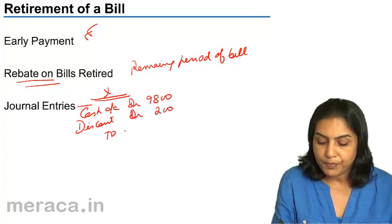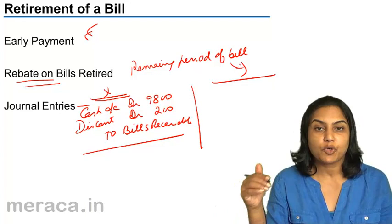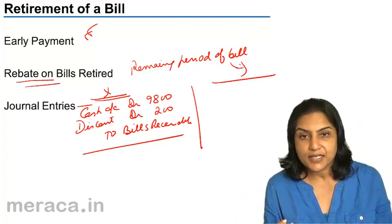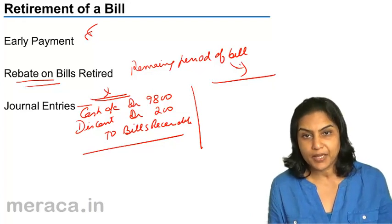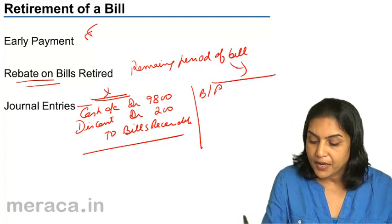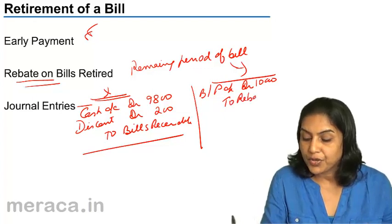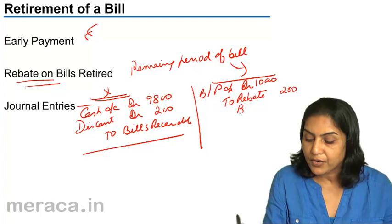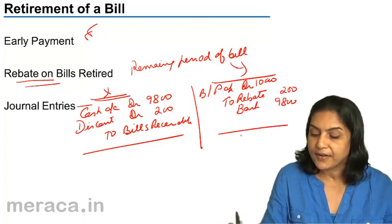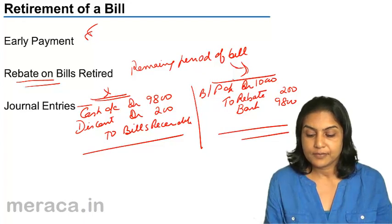So the entries in the books of X where bills receivable was there: cash account debit 9,800; discount account debit 200; to bills receivable 10,000. Similarly in the books of Y, the acceptor, where there is a bills payable — he gets a rebate, which is an income for him. The entry would be: bills payable account debit 10,000; to cash/bank 9,800; to rebate on bills retired 200. So this is the scheme of entries. Rebate is an income in the books of the person who is retiring the bill early.